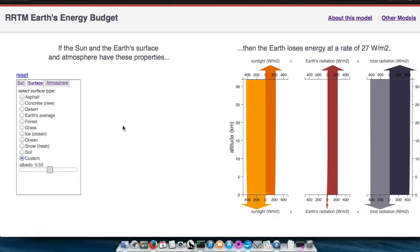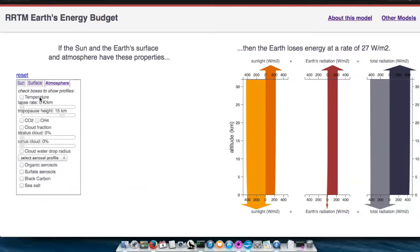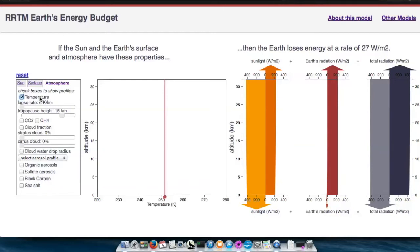You can change numerous aspects of the planet's atmosphere under the atmosphere tab. To start with, you can click on temperature. This will bring up the temperature graph.